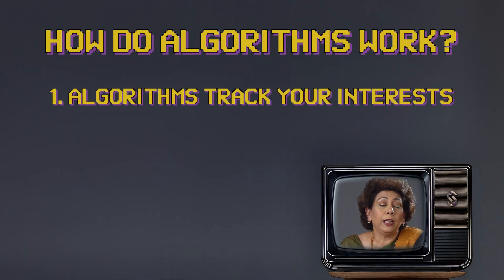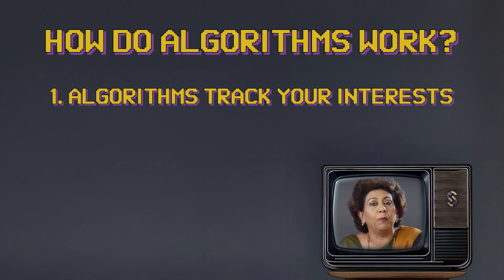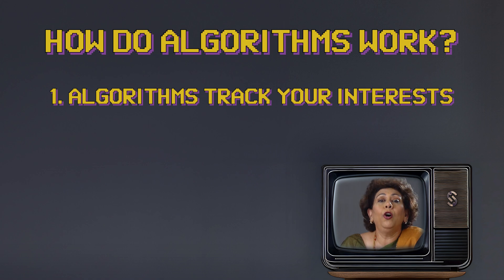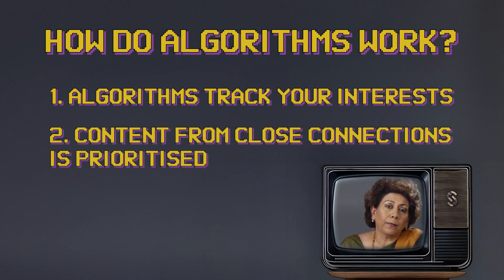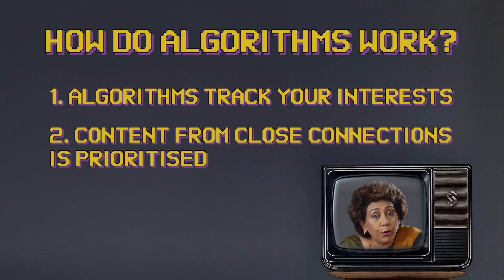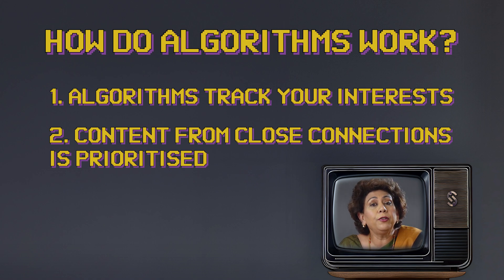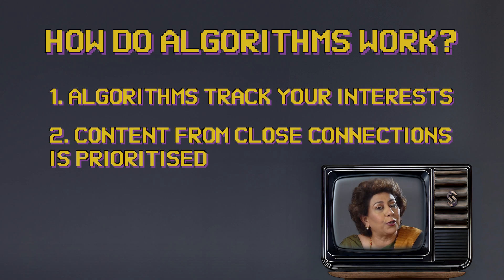Your interests. If you often like photos of recipes, you'll see more of them. It's like the algorithm saying, oh, you like food. Here's more. Your friends and family. Posts from people you interact with most appear at the top, because the algorithm invites your favorite relatives to sit at your table.